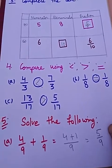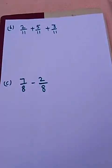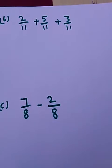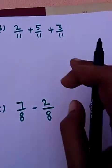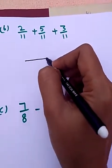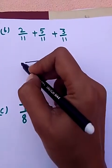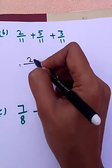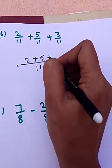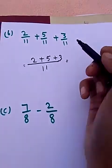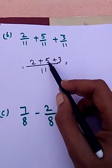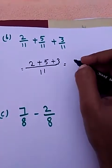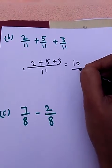Now come to Part B: 2/11 plus 5/11 plus 3/11. Denominator is same here, so we will write 11 in the denominator. 2 plus 5 plus 3. Now 2 plus 5 is 7, 7 plus 3 is 10, so 10/11.